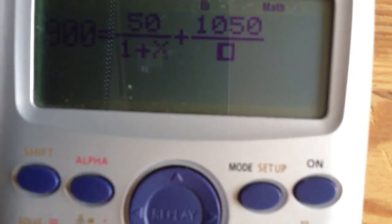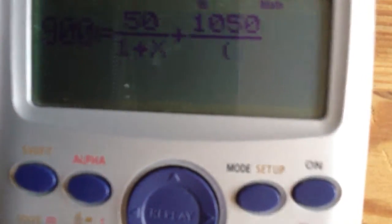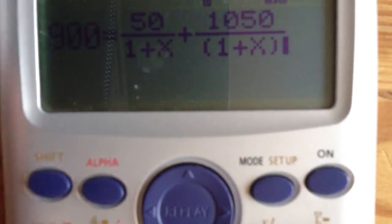And then you add a plus 1050 divided by 1 plus x. Again, shift close bracket and a square.